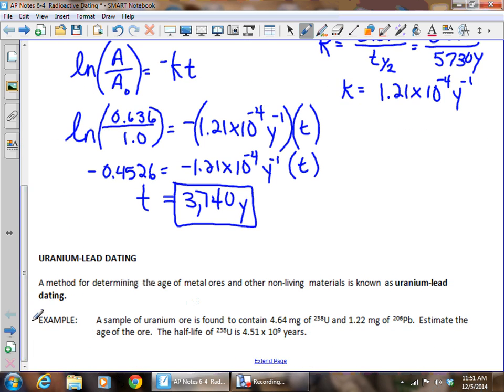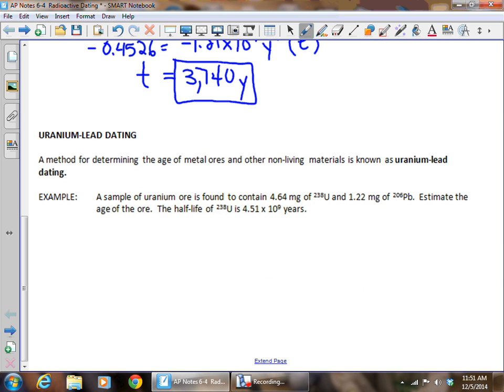There's also a method for dating much older objects, not living ones, much older objects, and it's known as uranium-lead dating. This is a type of dating we use to figure out the age of the earth. So in this case, it says we've got a sample of uranium that has 4.64 milligrams of uranium-238 and 1.22 milligrams of lead-206, and it wants us to estimate the age of the ore, and it gives us the half-life of uranium-238 as 4.51 times 10 to the 9th years.